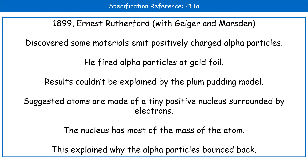Scientist number three worked in conjunction with two others: we've got Rutherford, who worked with Geiger and Marsden. They worked out that some materials emit positively charged particles, which they refer to as alpha particles. Using those positive alpha particles, he fired them at very thin sheets of gold foil. If the plum pudding model had been accurate, the alpha particles would have basically passed straight through. But they didn't — instead, some of them reflected back and bounced off at different directions, which did not support the plum pudding model.